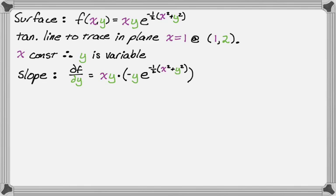So that's first times derivative of the second, plus we've got to do second, so second, and then the derivative of the first is actually just x, because the first is x times y. So derivative with respect to y is just x.